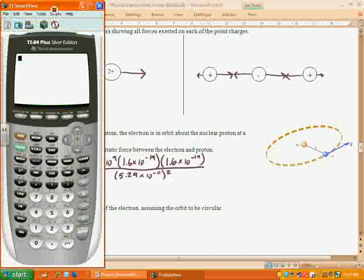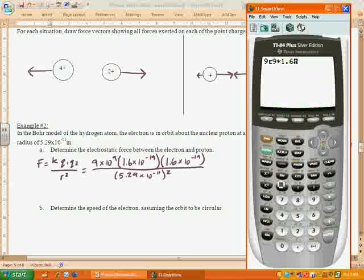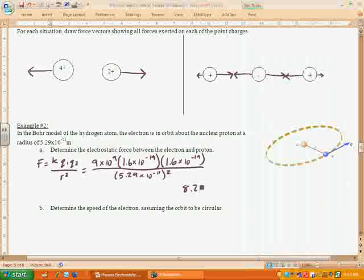So let's pull out our calculator and type that in. So we've got 9e9 times 1.6e to the negative 19th times 1.6e to the negative 19th divided by 5.29e to the negative 11 squared. All right, so there we go. 8.23 times 10 to the negative 8th. And since it's a force, that will be Newtons. So we found the force.